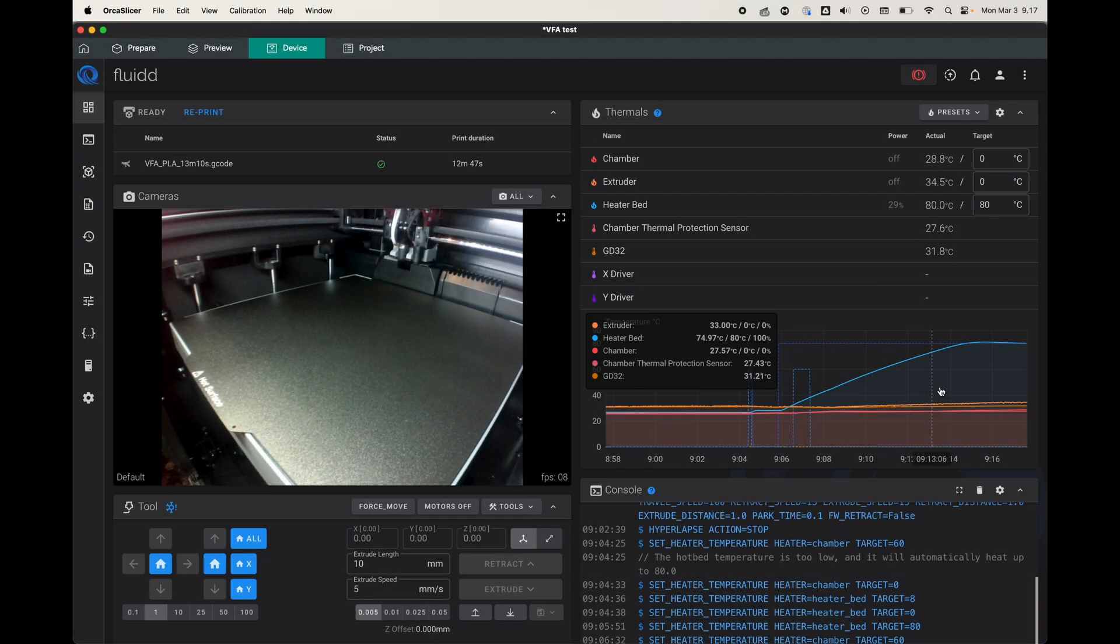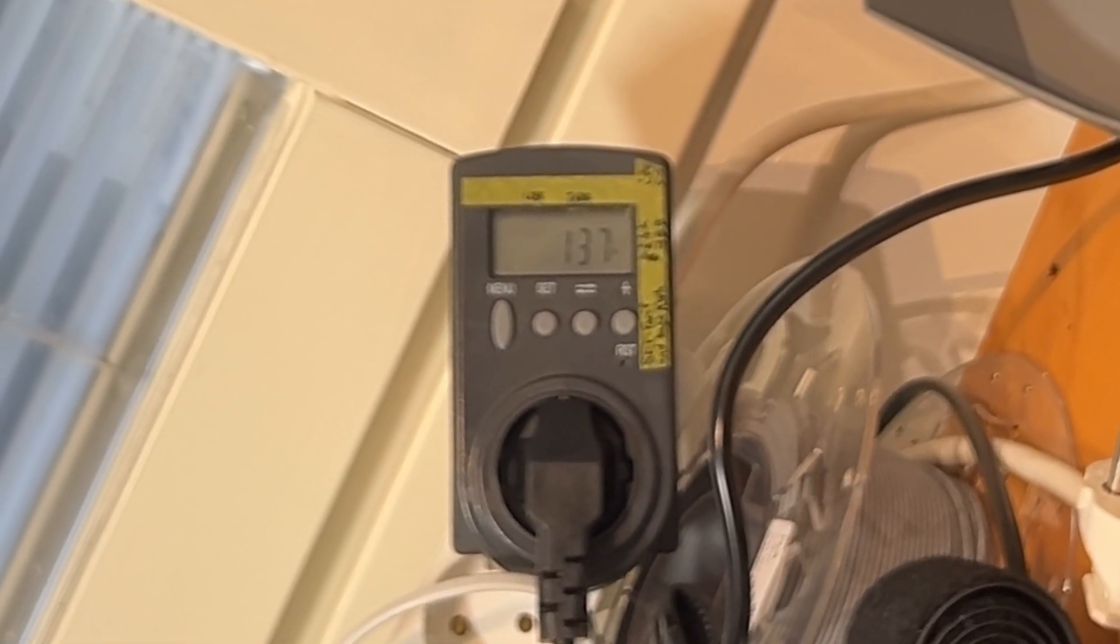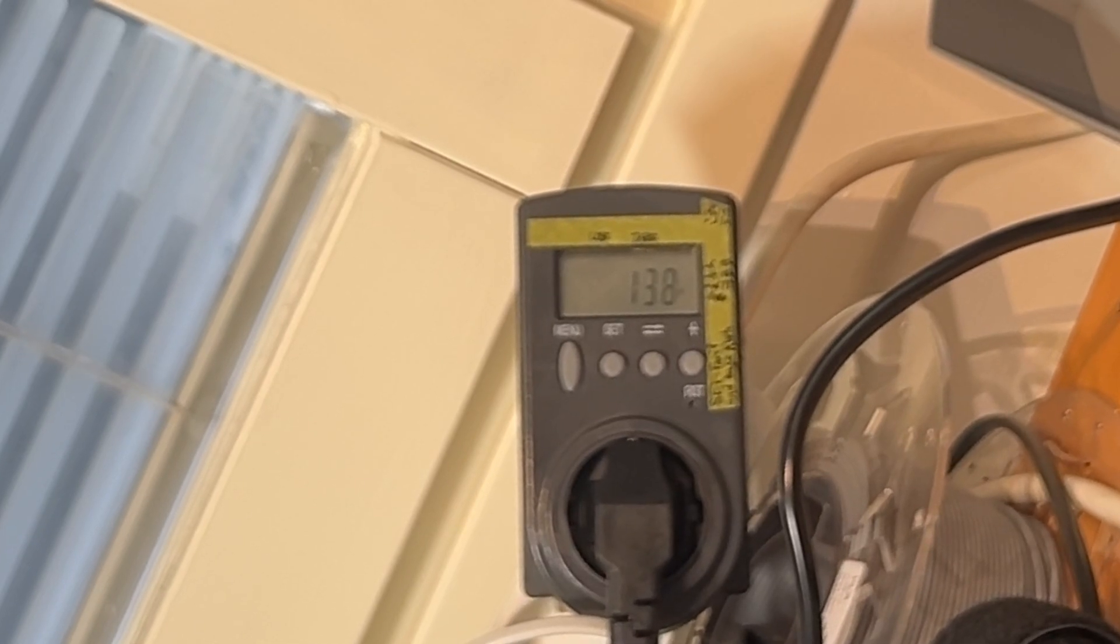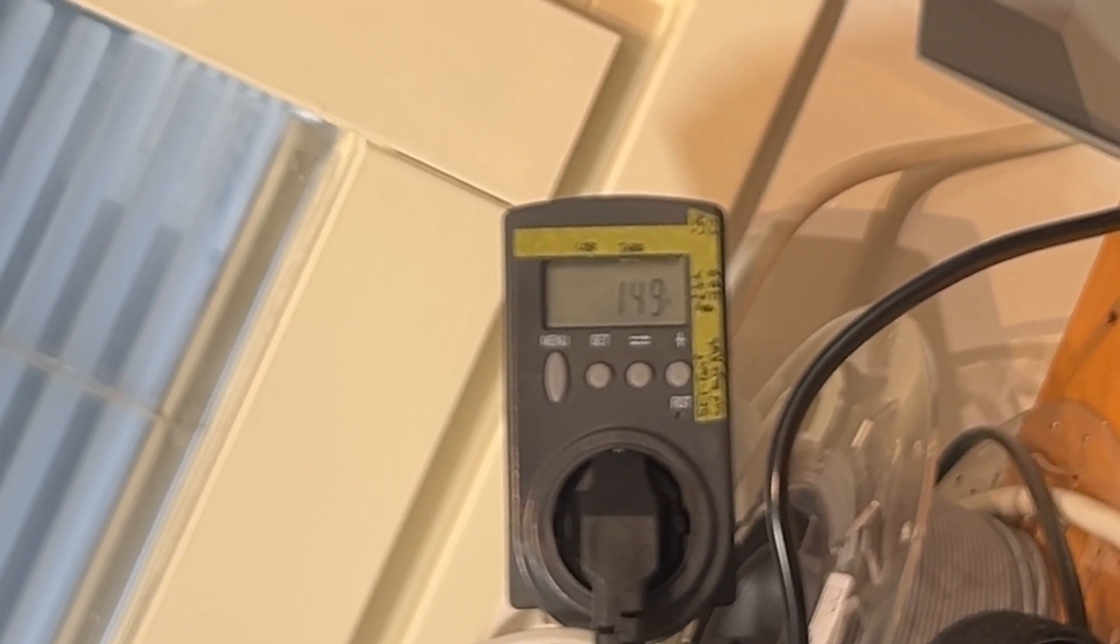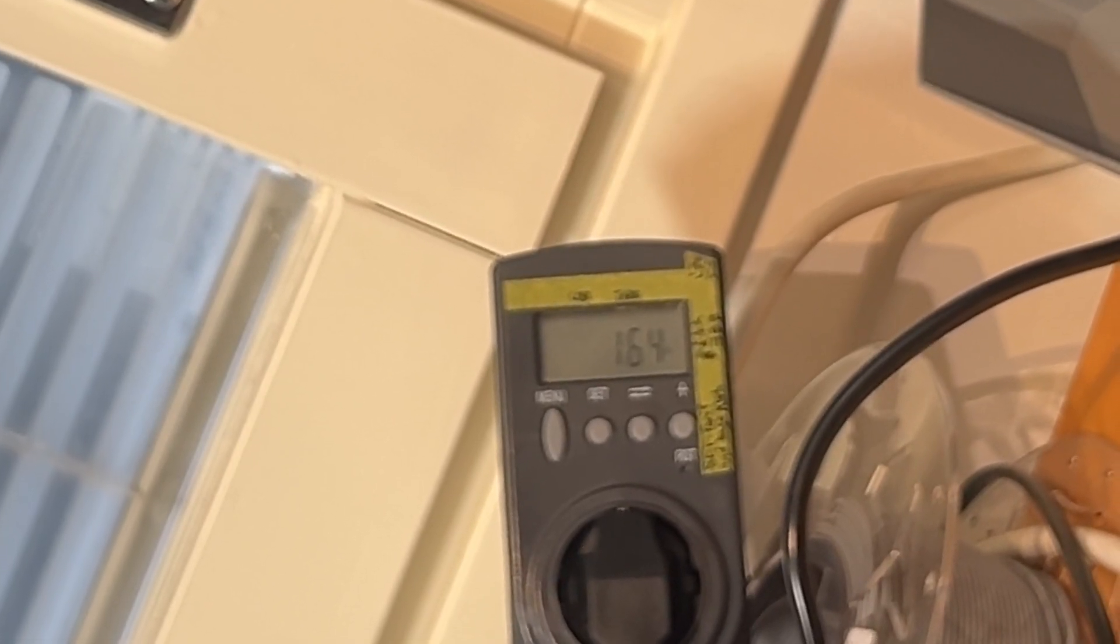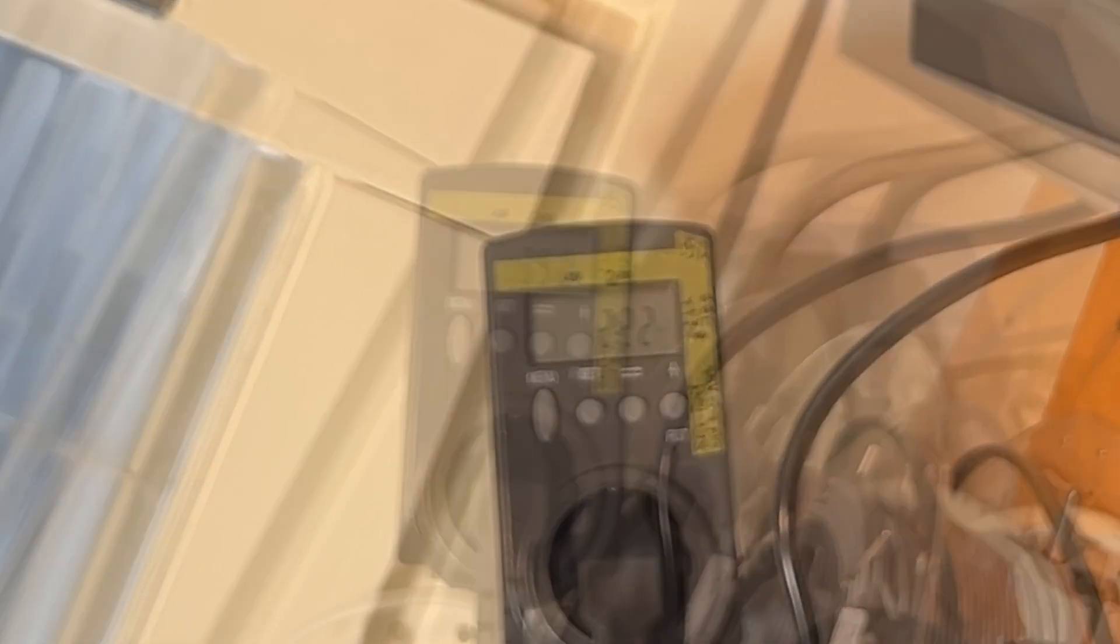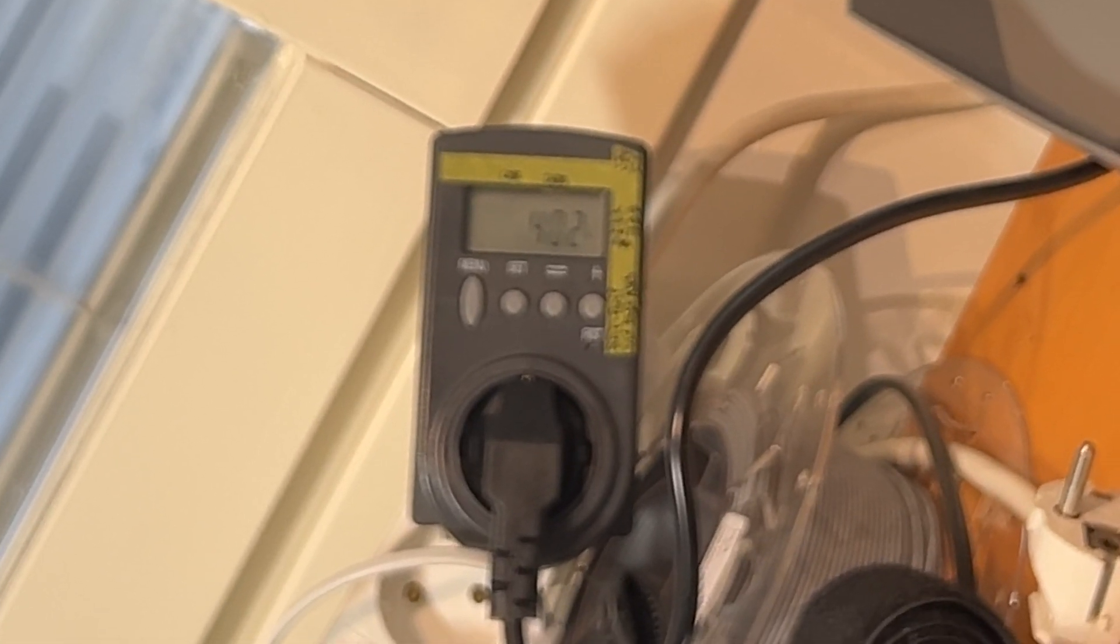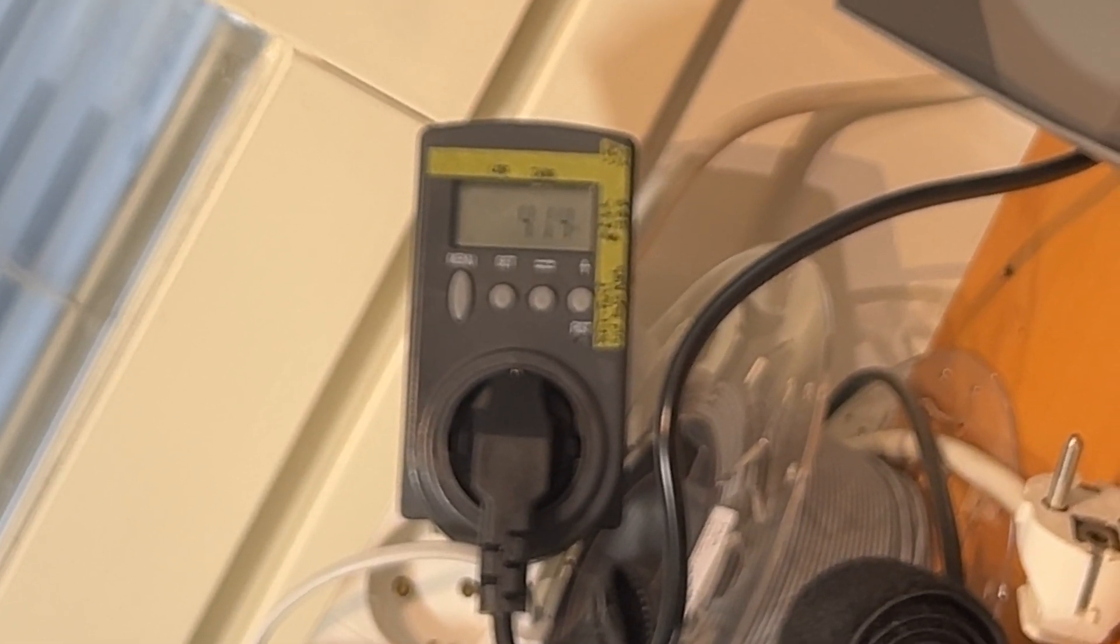Okay, so now the bed is at 80 degrees and the wattage varies quite a bit, but it's around 130 to 150 watts. Then we set the chamber temperature to 60 degrees and then we watch the wattage. So the total consumption is now 400 to 420 watts, so overall the chamber heater works at around 280 watts.